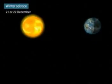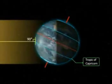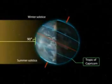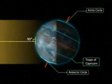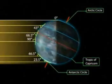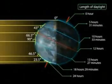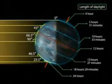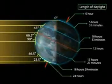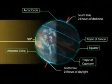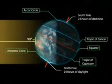Winter solstice. On the 21st and 22nd of December, the overhead Sun is over the Tropic of Capricorn. It receives the largest amount of solar radiation. On this day, the northern hemisphere is in the winter solstice, while the southern hemisphere is in the summer solstice. The angle of the Sun decreases towards the poles. On this day, the length of daytime in the northern hemisphere is the shortest in the year, while that of the southern hemisphere is the longest in the year. There are 24 hours of darkness at the Arctic Circle, and 24 hours of daylight at the Antarctic Circle.